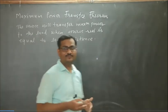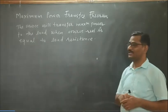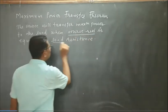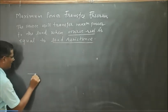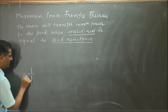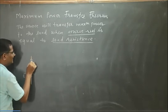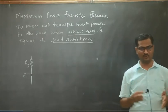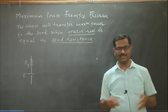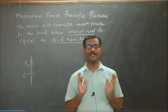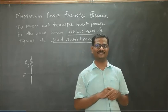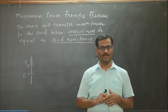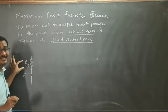Before going into the details of the theorem, we will first see what source resistance and internal resistance are. Let us take an EMF source of EMF E. It has its inherent resistance. Any EMF source, whether it is a DC source or an AC source, is always associated with some inherent or internal resistance. It always appears in series with the source, called the source resistance or internal resistance of the source.